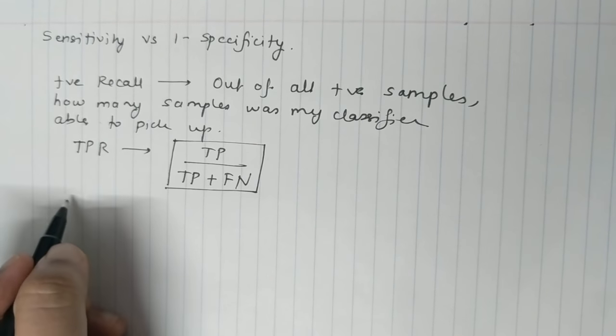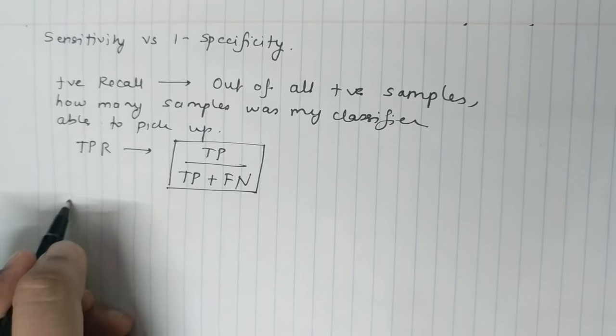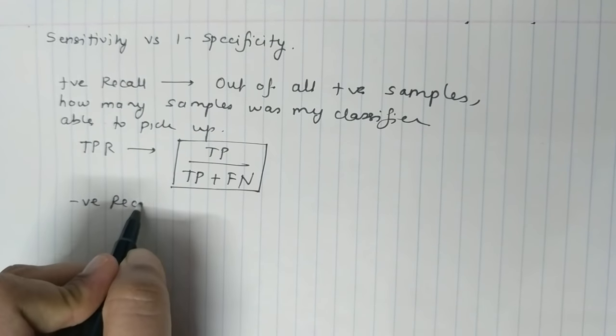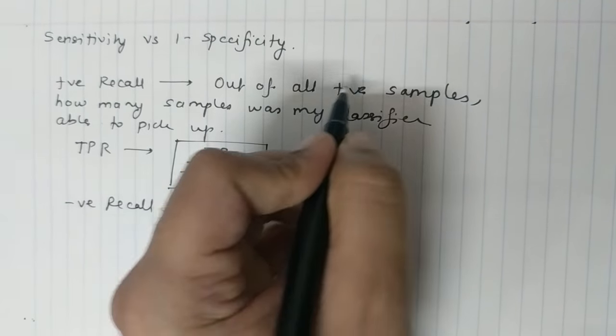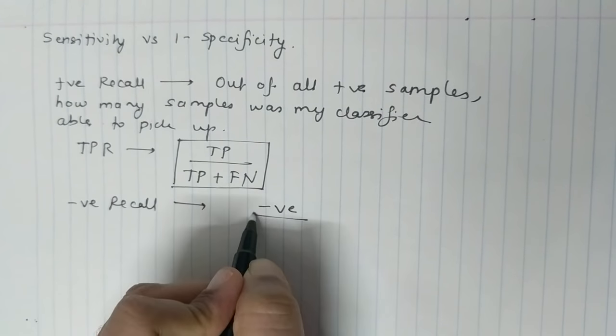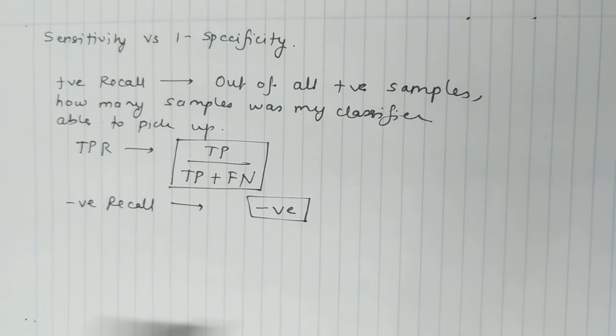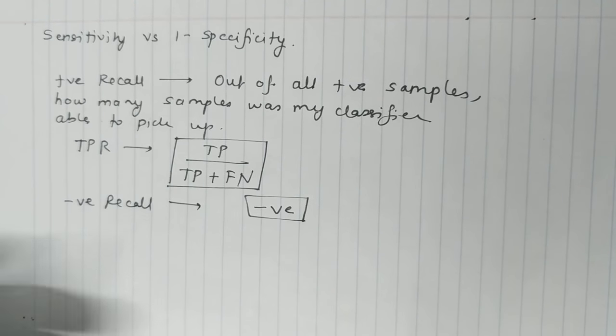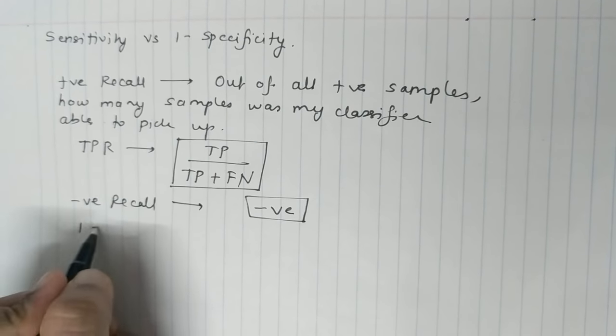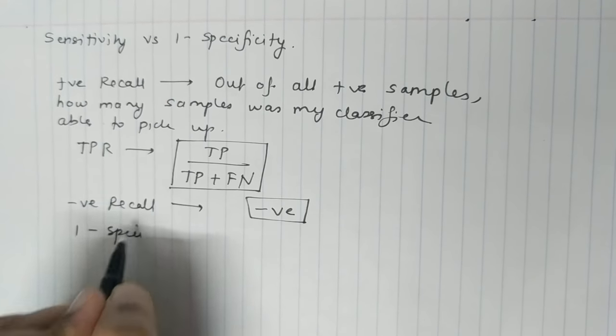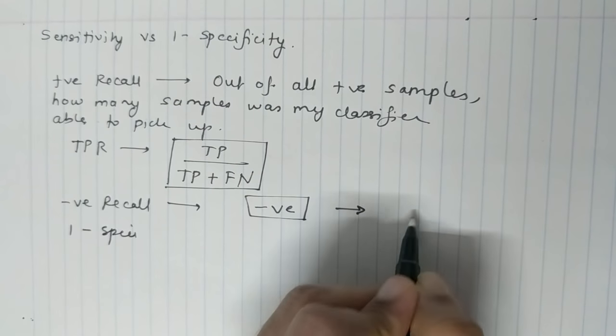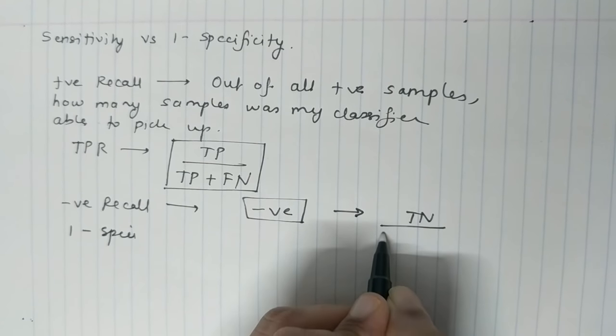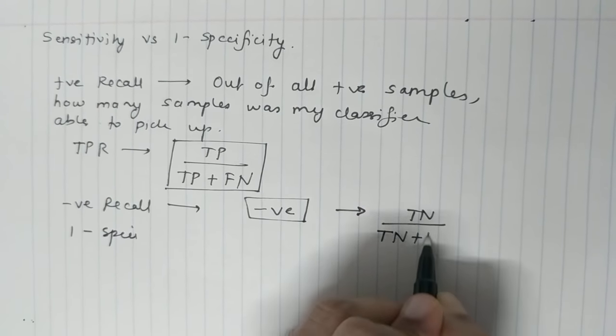Now specificity is basically negative recall. That simply means out of all the negative samples, how many samples was my classifier able to pick up? That's what specificity is. The formula for this would be TN upon TN plus FP.